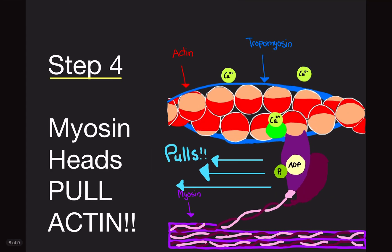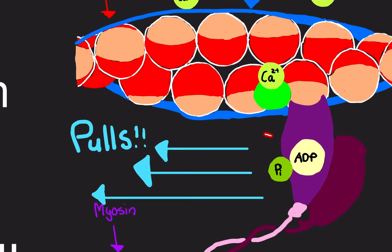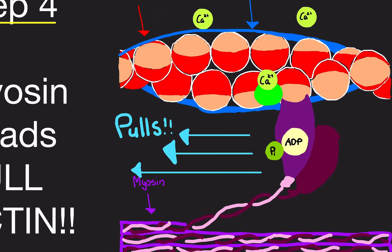Step four: myosin heads pull actin. With all their force, they're going to be pulling, and this is what causes the contraction. This myosin head is really charged — it has a lot of energy and it's able to pull. The pulling action on the actin is what causes your muscles to actually contract. This right here is the actual contraction. So when you flex your biceps, triceps, any muscles in your legs or your back — this is what's happening, this is how you're able to do it.